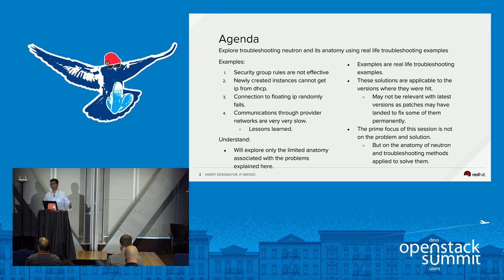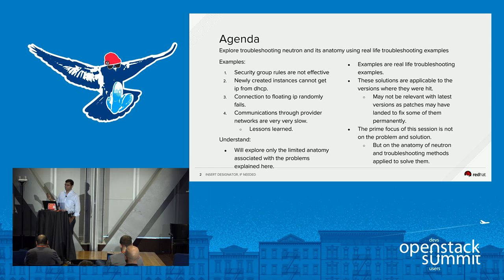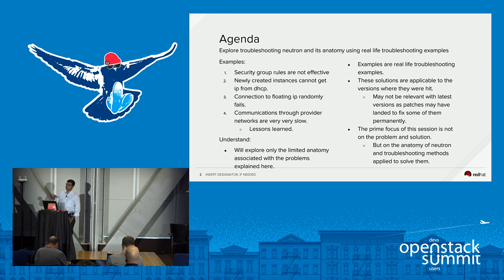Before I start, I just want to set your expectations right. We are going to explore a limited anatomy of Neutron — the time is not enough to explore the entire Neutron anatomy. I will explore the anatomy of Neutron that is related to the problems I'm going to speak about. These examples are real-life examples, and the problem and solution are specific to the version where we hit the problem. Your focus should be on understanding the anatomy of Neutron and the troubleshooting steps we followed, so that you can solve a similar problem in future.